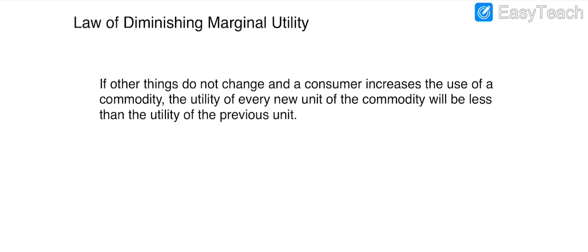First we explain what the law says. If other things don't change — these are the assumptions of the law — within the assumptions, the law will be accurate. When a consumer increases the use of a commodity, the utility of every new unit of the commodity will be less than the utility of the previous unit. It means each new unit will have less utility compared to the previous unit which the consumer has already used.